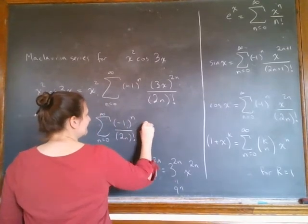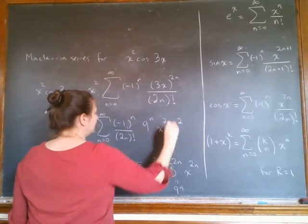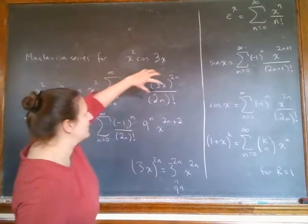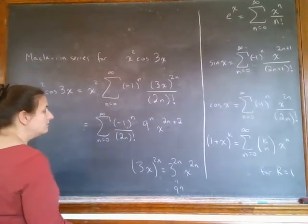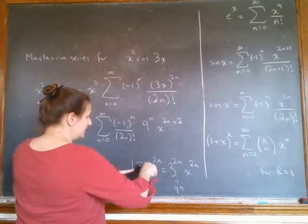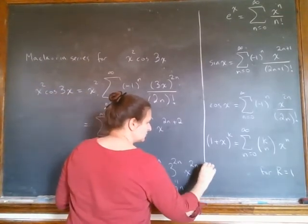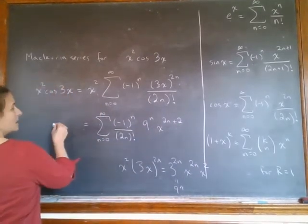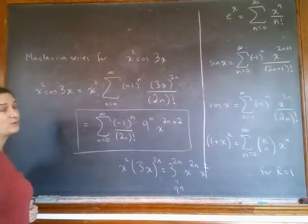So we have 9 to the n and x to the 2n, but it's 2n plus 2, because I want to take this x squared and put it into that. I broke it up so that when I multiply this guy, this is going to be x squared there, and that becomes x to the 2n plus 2. So this is my nicest, cleanest, prettiest form.